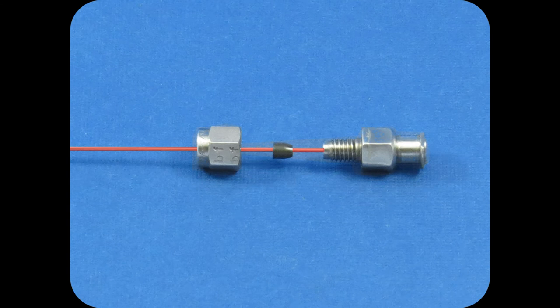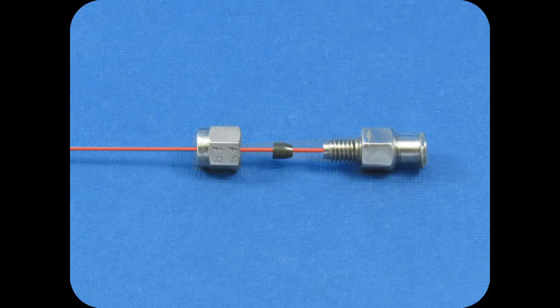To make a custom dispensing needle, the first thing you'll need is some length of hypodermic tubing. This can be tubing that you cut yourself or it can be our pre-cut or bent pieces of hypodermic tubing.